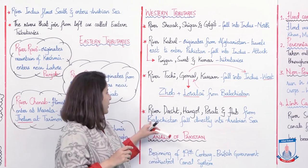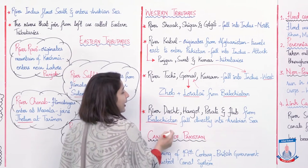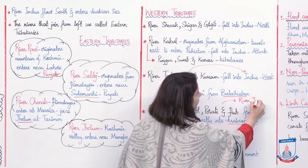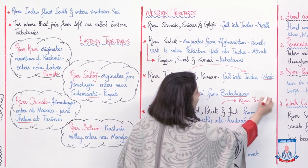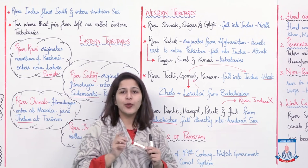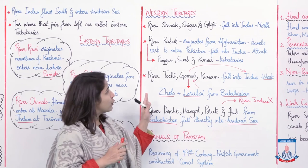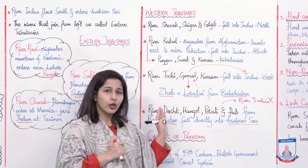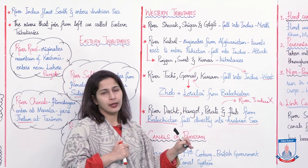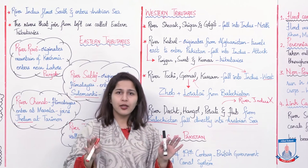Moving on, we have rivers Dasht, Hangol, Purali, and Hub. These four rivers originate from Balochistan and they directly fall into the Arabian Sea — they do not join River Indus at all. The map on your screen shows how these tributaries enter their individual rivers — how Panjgora, Swat, and Kunar fall into Kabul, which then meets River Indus; and how Zohab and Loralai fall into Gomal, which then meets the Indus.